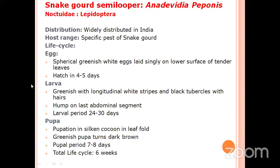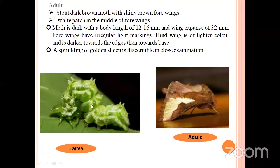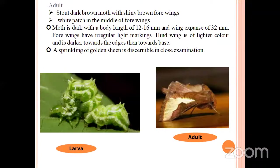This is the larvae of the snake gourd semilooper. The caterpillar is greenish in color with white longitudinal stripes on the body and a hump on the last abdominal segment. The adult is Anadevidia peponis — brown in color with shiny brown forewings. There is a shiny white patch on the forewing. The adult moth is about 12 to 16 mm in length. The forewings have irregular light markings and the hind wings are light brown in color, darker towards the edges, with a sparkling golden sheen on the forewings.